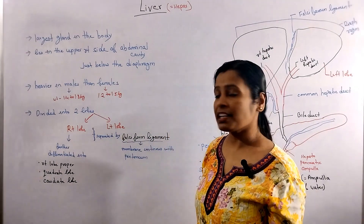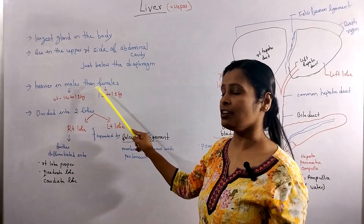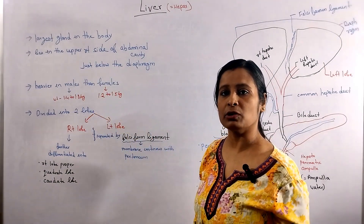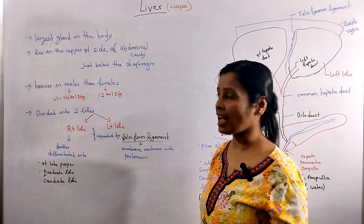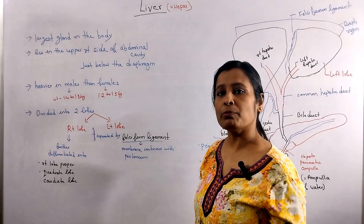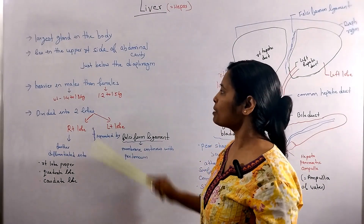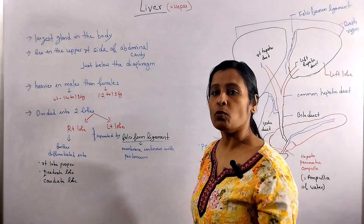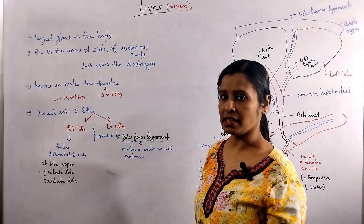What is the liver like? It is heavy and dense. In males, its weight is 1.4 to 1.8 kg. And in females, its weight is 1.2 to 1.5 kg.